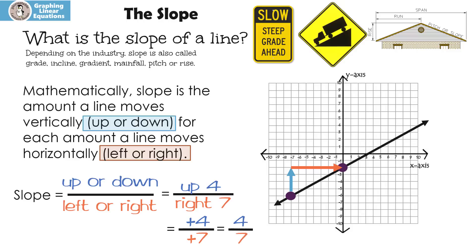What if I picked two different points on this line? They're still going to have the same slope. I'm still going to be going up four and I'm still going to go to the right seven. Every two points on this line will have the exact same slope.